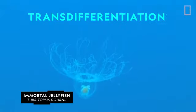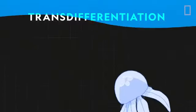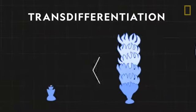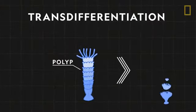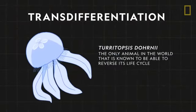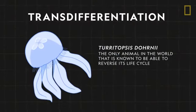The Turritopsis dornii has earned the moniker the immortal jellyfish for being able to undergo a process called transdifferentiation. An adult or juvenile under stress, instead of dying, can revert back to a polyp and begin the life cycle all over again. It is the only animal in the world that is known to be able to reverse its life cycle.